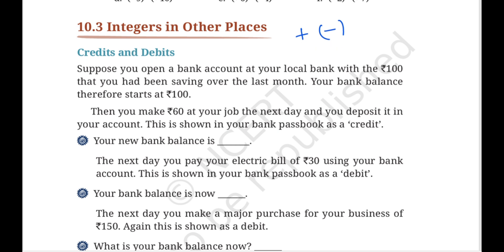Suppose you open a bank account with rupees 100 that you had been saving over the last month. Your bank balance starts at rupees 100. Then you make rupees 60 at your job the next day and you deposit it in your account. This is shown in your bank passbook as a credit. Counting 100 plus 60, rupees 160 will be there in our account.